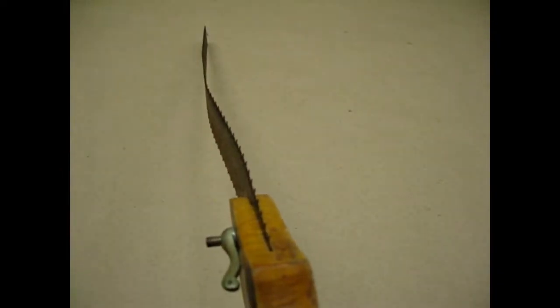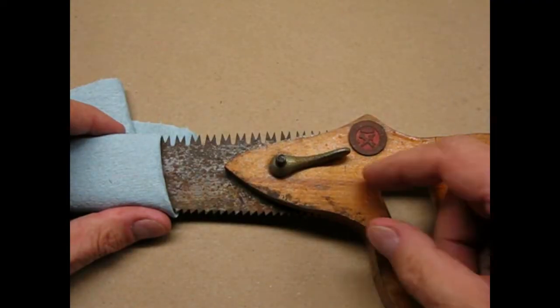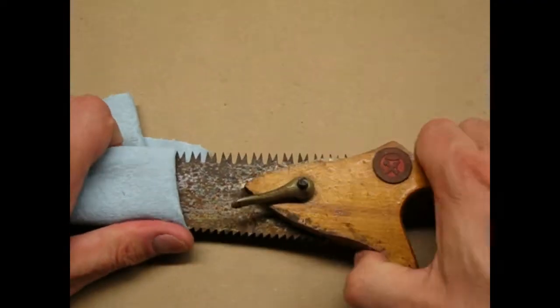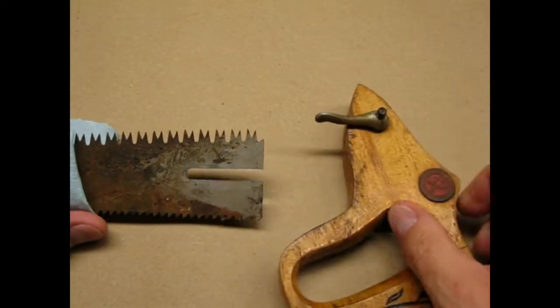The blade could stand to be a little straighter. You loosen this wing nut and pull the blade out to reverse it. Seems like a good way to cut up your hand.